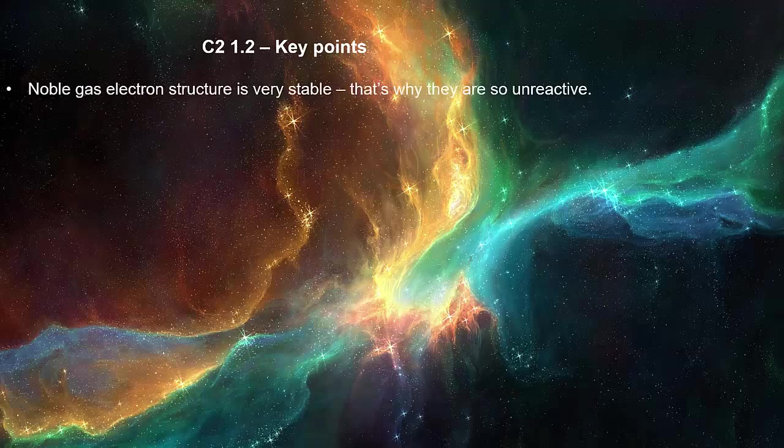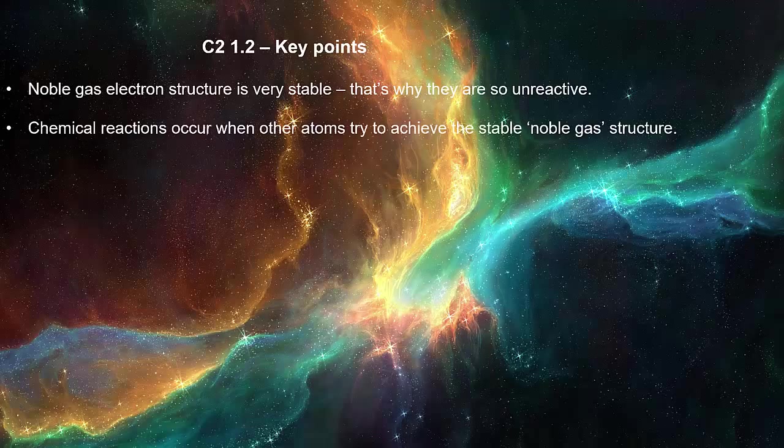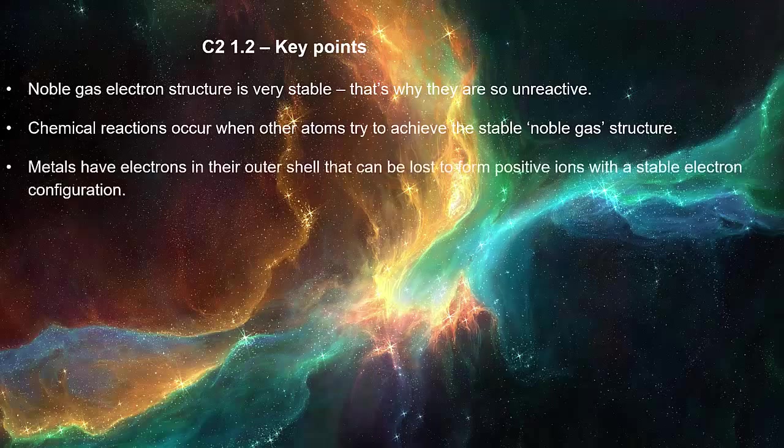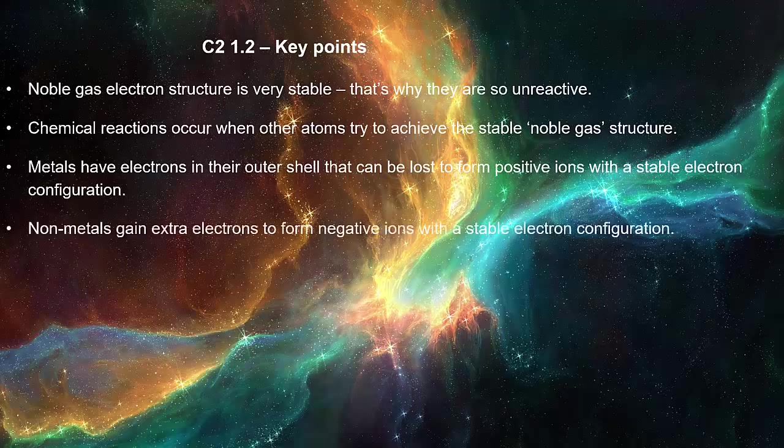Noble gas electron structure is very stable. That's why they are so unreactive. Chemical reactions occur when other atoms try to achieve this stable noble gas structure. Metals have electrons in the outer shell that can be lost to form positive ions with a stable electron configuration. Non-metals gain extra electrons to form negative ions with a stable electron configuration.